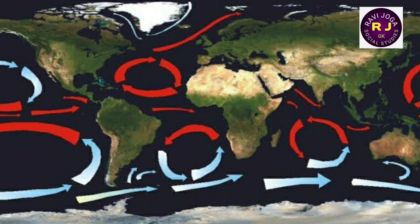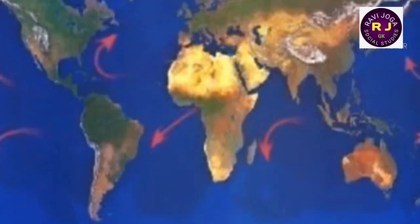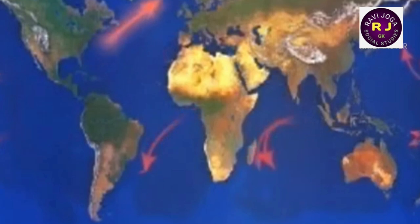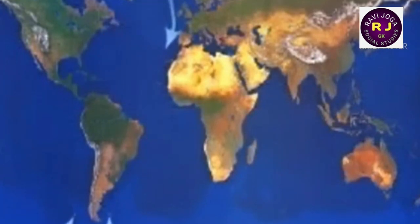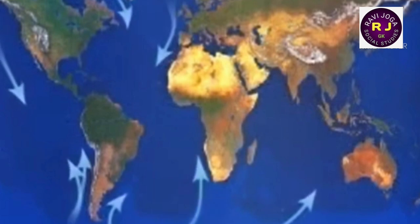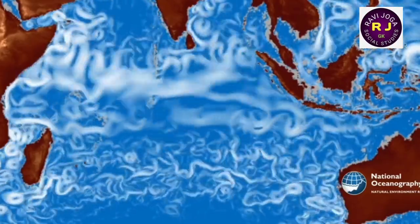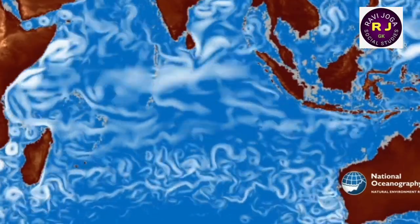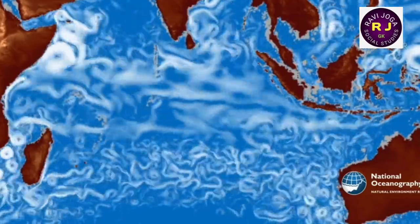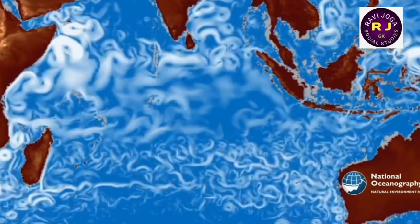Generally, warm currents flow from the equator towards the poles. Cold currents flow towards the equator from the polar regions. Ocean currents can also be classified based on speed: a stream is an ocean current that flows speedily, while a drift is one that flows slowly.